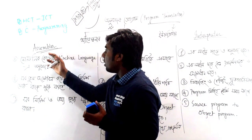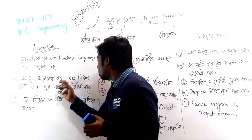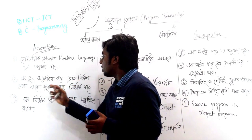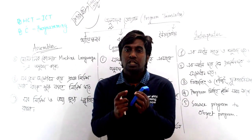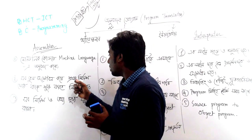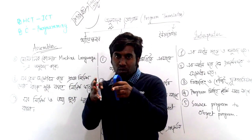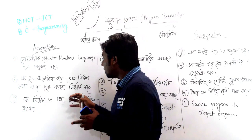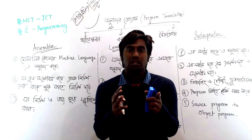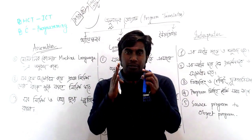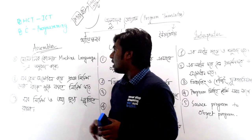Assembly language is called mnemonic code, and it is considered the first language used when programming work first started. The unique characters are based on primary character codes. This is how assembly language works.